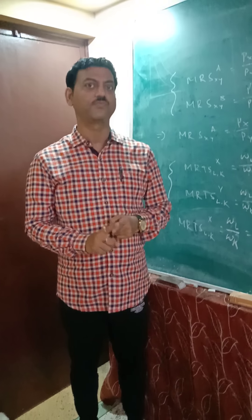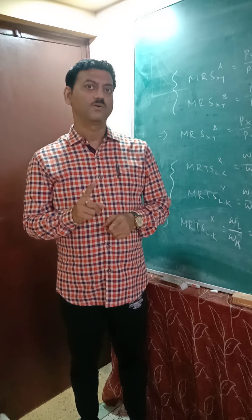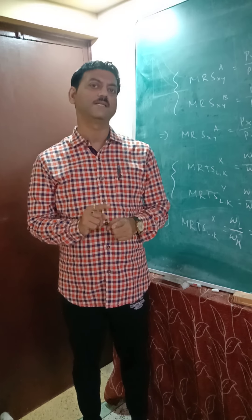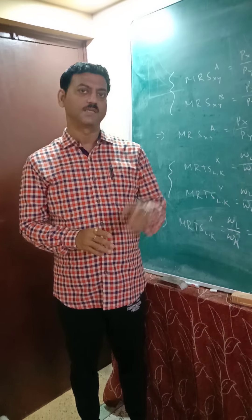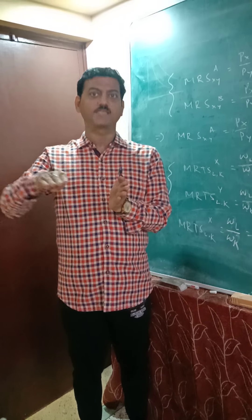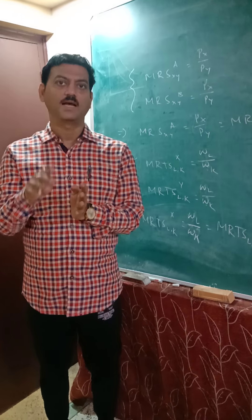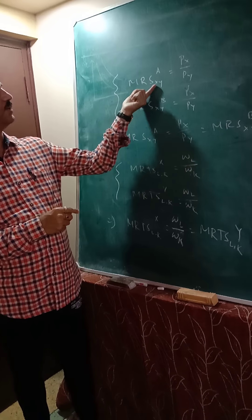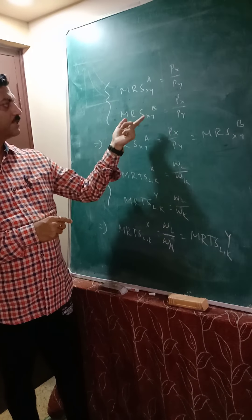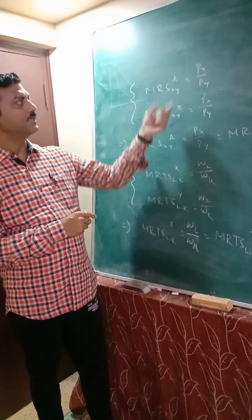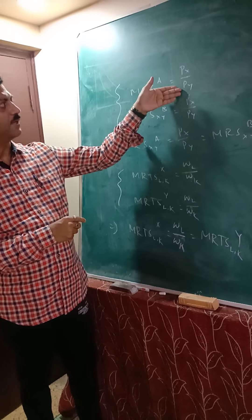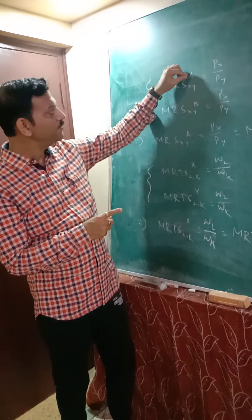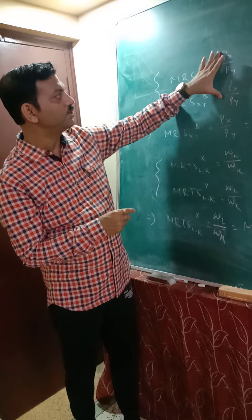Not only that, factor prices are also fixed. If we consider consumer behavior analysis, a rational consumer will attain equilibrium where the given budget line is tangent to the highest possible indifference curve. The point of tangency means that the MRS of individual A must equal the price ratio. The same is true for individual B. Since Px and Py are both constant, their ratio is constant, and both individual A and individual B face the same price ratio.